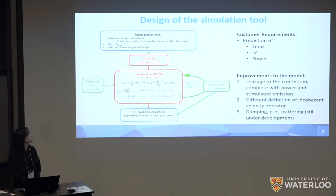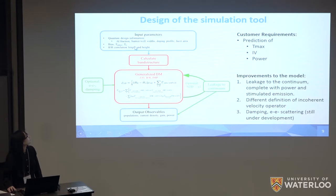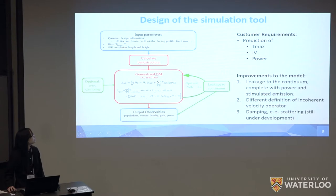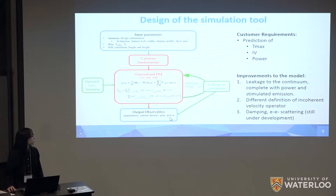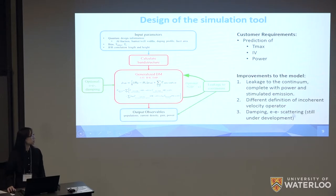In terms of what the simulation tool provides: it predicts maximum operating temperature, IV characteristics, and optical power. Users can input quantum design parameters such as barrier and well thicknesses, plus temperature and bias conditions. The model then calculates the band structure, wave functions, and eigenenergies, which feed into the generalized density matrix model to output current density, gain, and power. My improvements to the model include calculating leakage to the continuum — the amount of carriers lost and unavailable for gain — as well as an option for electron-electron scattering and damping, which is still under development.